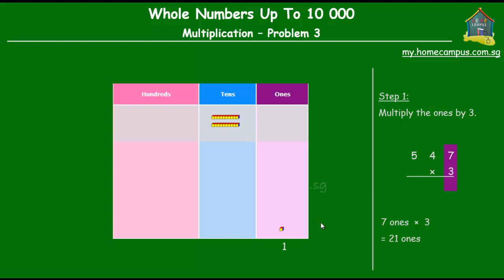So let's look at the working then. 7 ones times 3 is equal to 21 ones or 2 tens and 1 one. That's the first step. The next step is to multiply the tens by 3. Now, in our case, the number has 4 tens. So we put the 4 tens there.